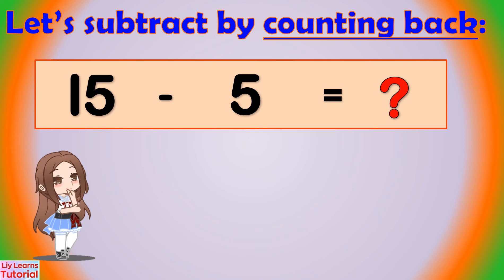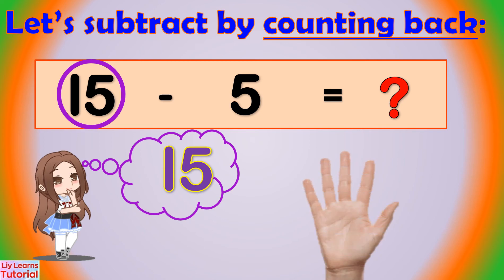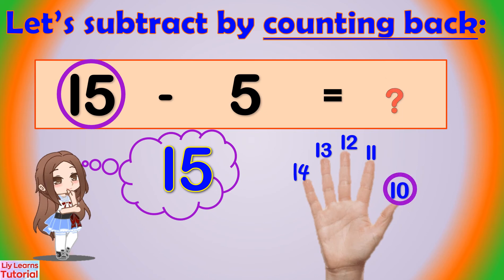Let's subtract 15 minus 5. First, put the minuend or the bigger number in your head. That is 15. Put the subtrahend on your fingers. That is 5. Then count back from 15: 15, 14, 13, 12, 11, 10. The answer is 10.